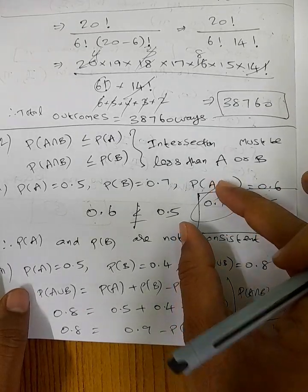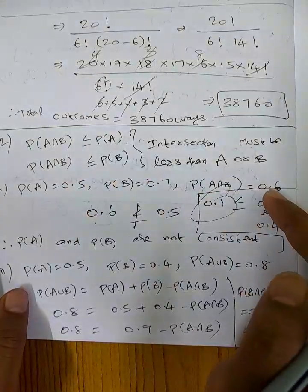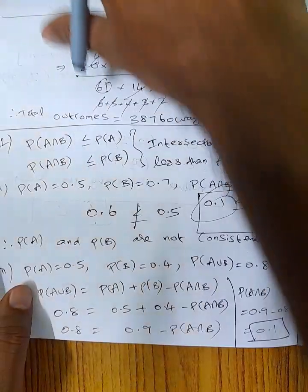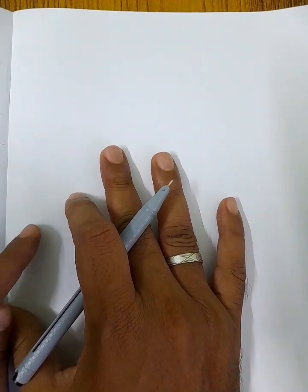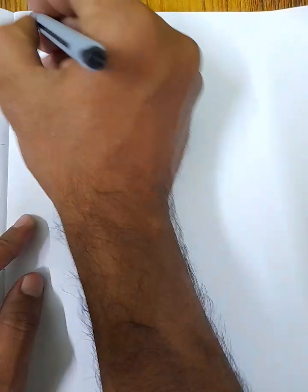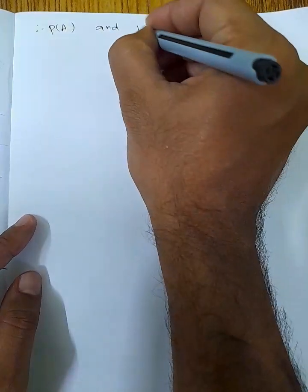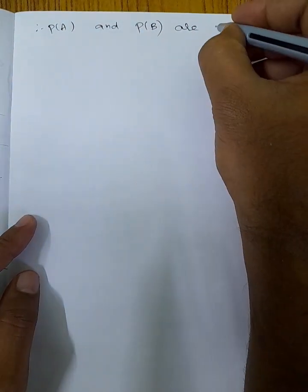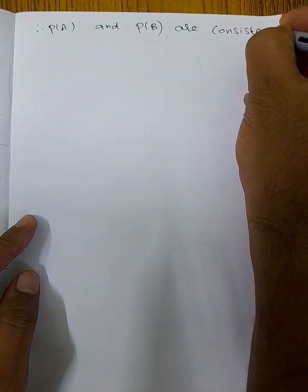P(A∩B) is less than or equal to P(A) and P(B), so we can conclude it is consistent. Therefore P(A) and P(B) are consistent.